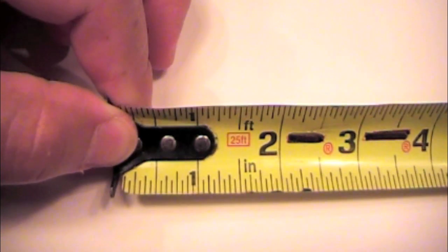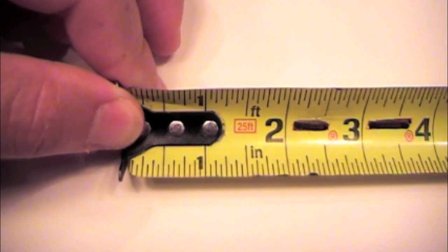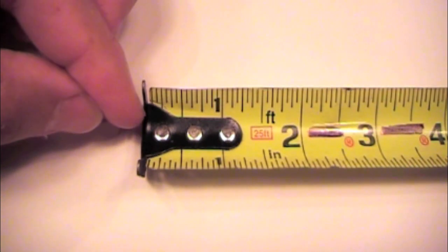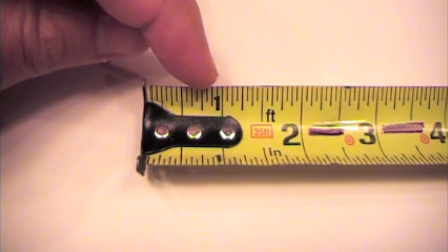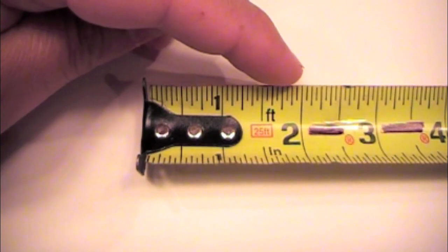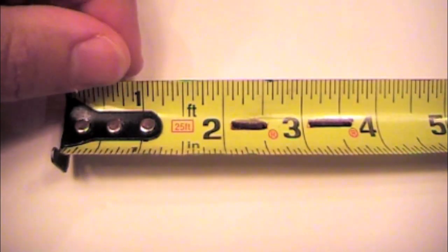As we extend the tape out of the tape measure, we see that we have standard numbers starting at the end would be zero. We have one inch, two inches, three inches, and so on.